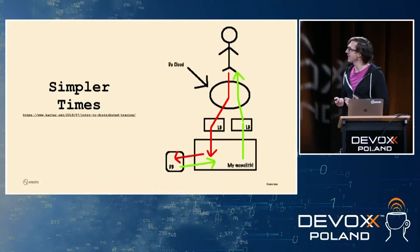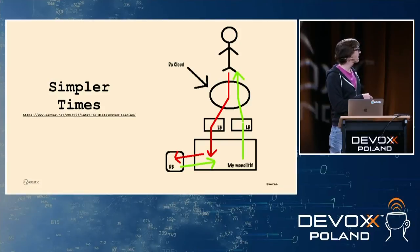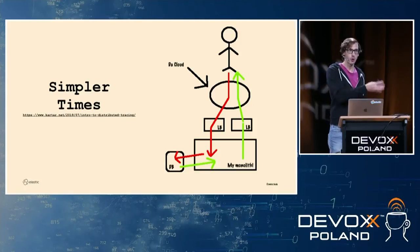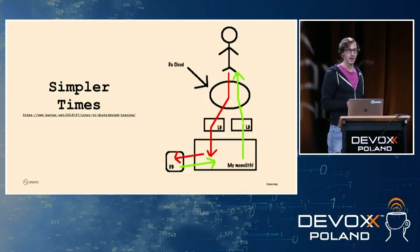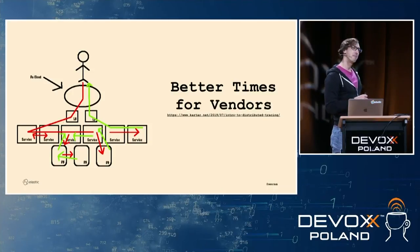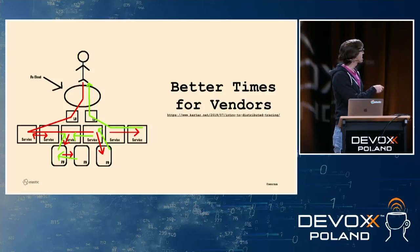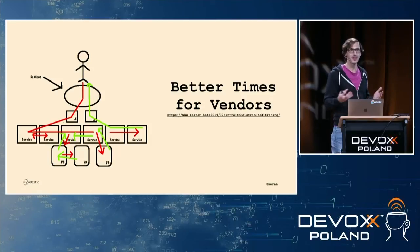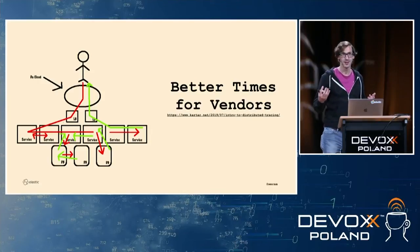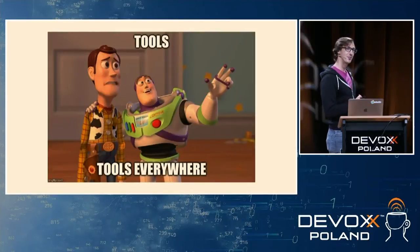Back in the day it was simple: a load balancer, a monolith, a database. Having a log statement worked — you could tail that log file and know what's going on. Nowadays, if your application has multiple databases and lots of services talking to each other, a log message in one service doesn't tell you much about the entire state of the system. You need much more tooling — which is great. Tools everywhere, right? Which is pretty much what DevOps has become.